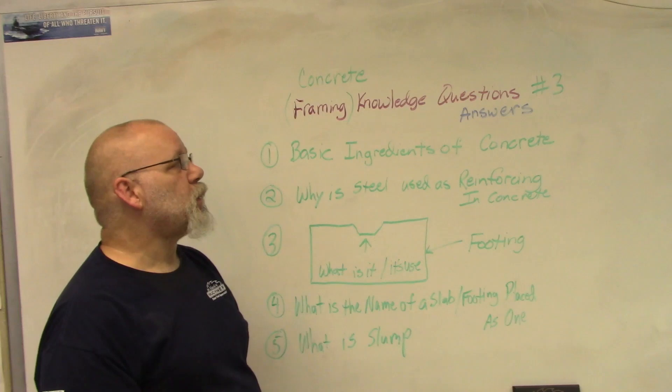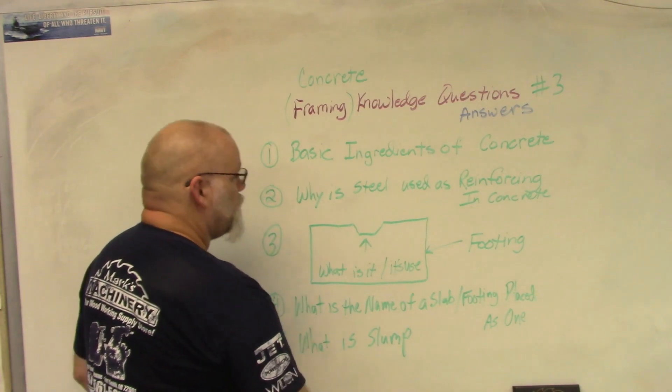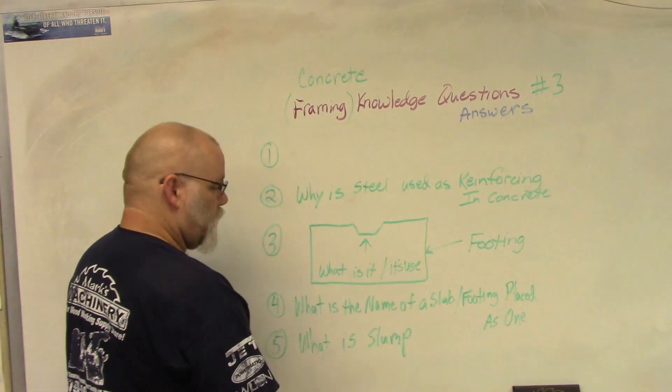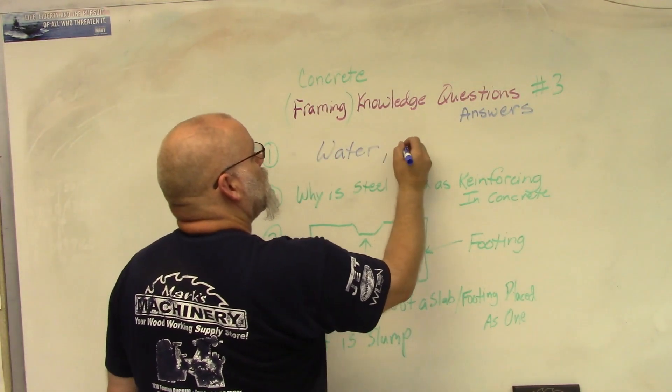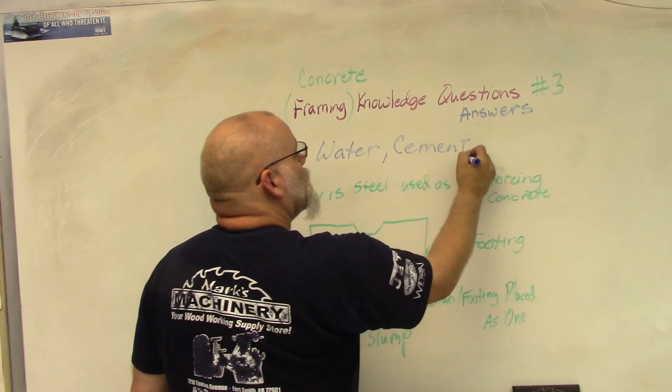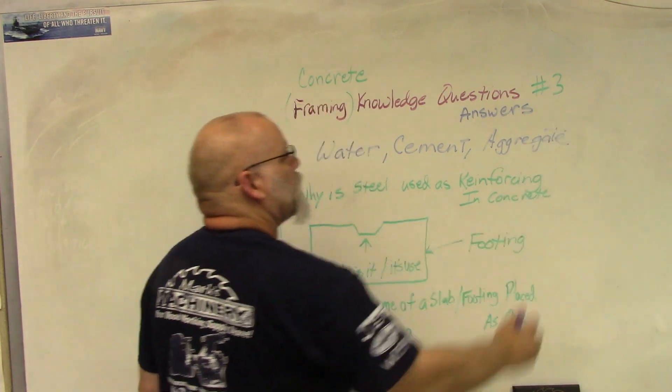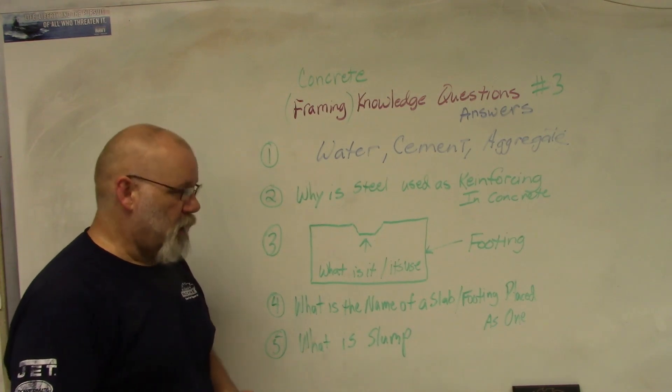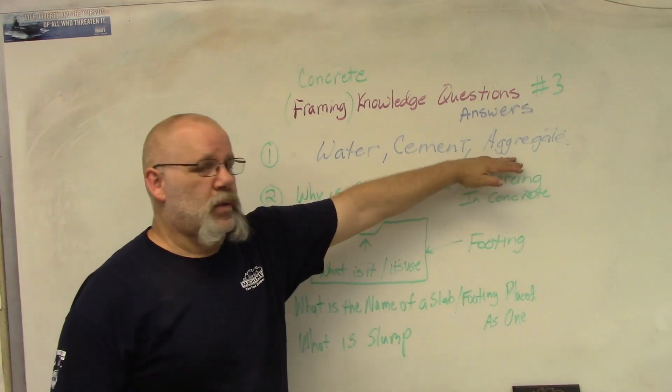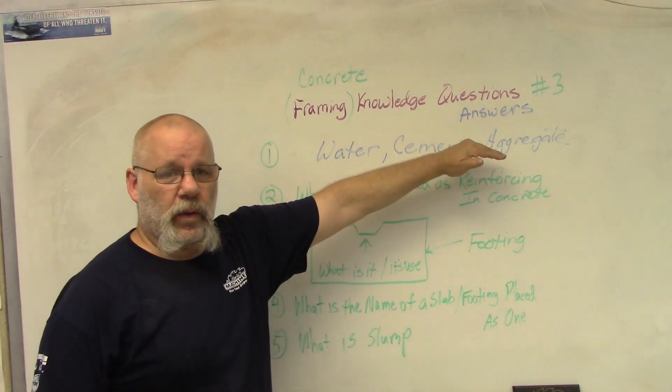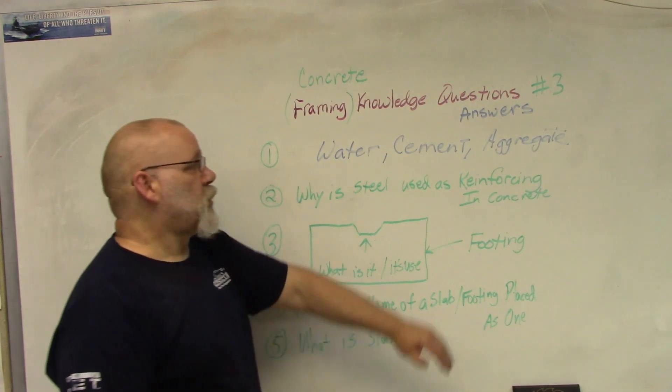Number one: what are the basic ingredients of concrete? The three main ingredients of concrete are water, cement, and aggregate. Aggregate is the filler material - that's your rock or gravel, sand, or whatever you're going to put in there. In most cases, cement, coarse Portland cement, and water. The amounts of each one will depend on your mix.